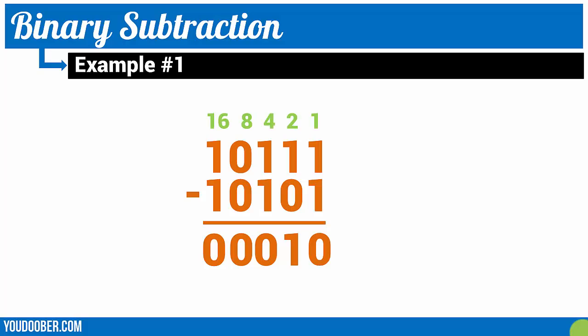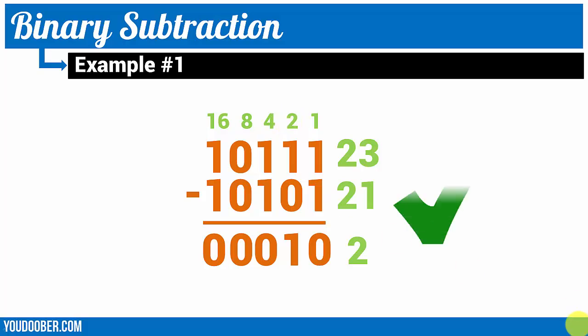To check it in decimal, we put our little conversion table at the top and add up the ones. For the top row, 16 plus 4 plus 2 plus 1 equals 23. 16 plus 4 plus 1 equals 21. 23 minus 21 is 2. So you can see that this 1 in the answer corresponds to the 2, so we know that answer to be correct.